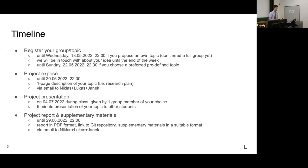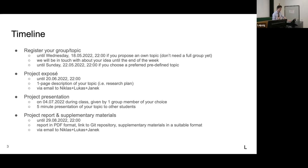Regarding the timeline, there are four steps. First, decide on and register for a group and a topic. We will propose some predefined topics that give a general direction, and you can build your own thing within that frame. You can also propose your own topic — please get in touch with us by Wednesday evening this week. If you submit your own idea, we'll be in touch by the end of the week. If you choose a predefined topic, send us a mail by Sunday the 22nd.